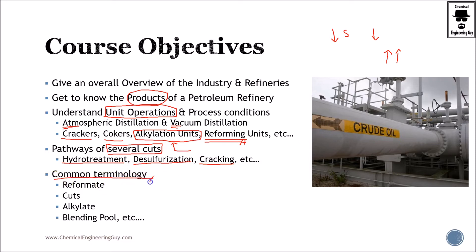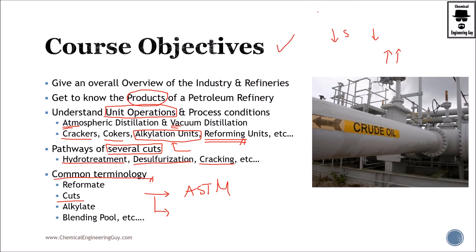As we go on in this course, you will learn and get to know many terms — some simple, like cuts, gasoline, reformates, alkylates, and blending pool — and more technical ones, such as ASTM specifications, octane ratings, and industry jargons like why we use barrels. The main scope stated before is to feel confident in the refinery industry, and I hope the course meets your expectations.